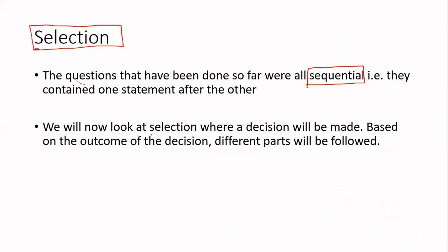Now when we look at selection, we are going to be making a decision. And that decision is going to have a particular outcome. Based on the outcome, we could follow different pathways. So let's assume we are executing this particular pathway — we're going to get to this point, and at this point we could have two different pathways to take. Based on the decision, you will decide: I will go this way, or I will go that way. I can't go in both directions — I can only go in one of them. Everything will hinge on the outcome of this particular decision.